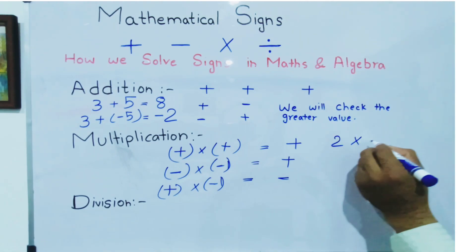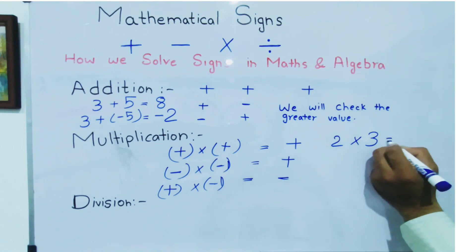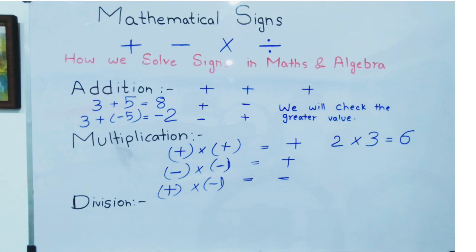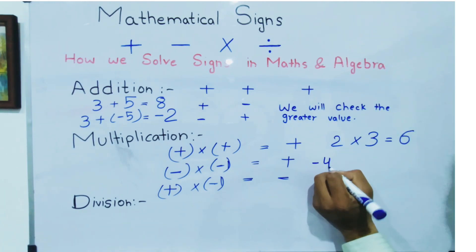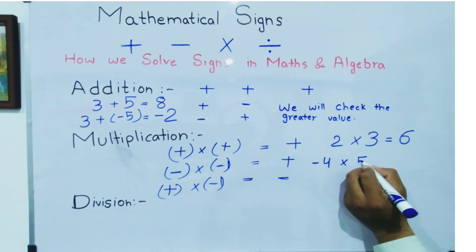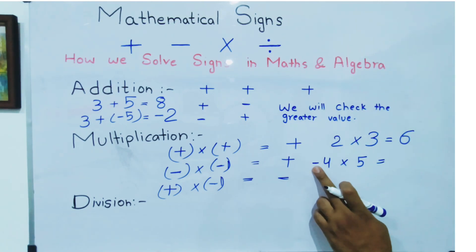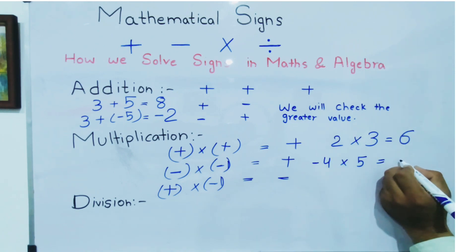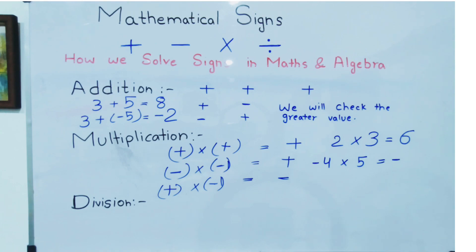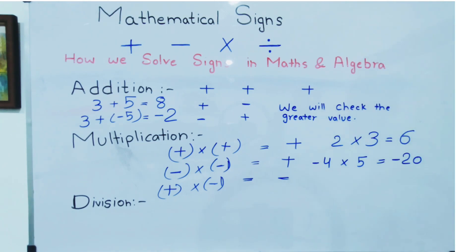You can check: two multiplied by three — as both values are positive, the answer will be positive. Now suppose we have values with different signs, like minus four multiplied by five. Both signs are different — the first is negative and the second is positive — so the answer will be negative: four multiplied by five becomes minus twenty.